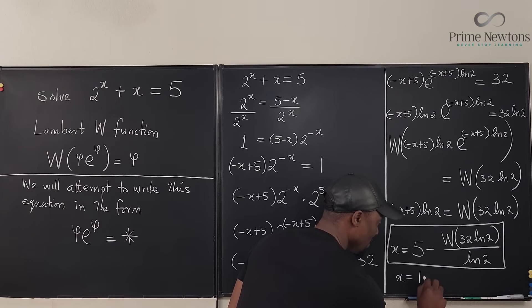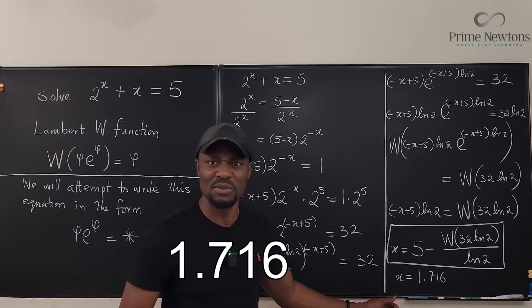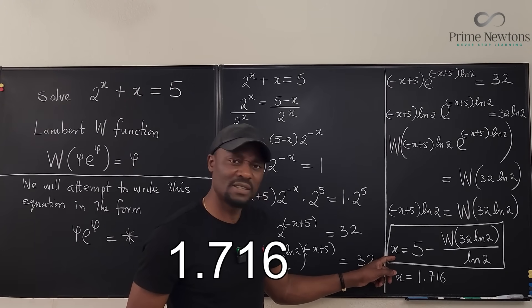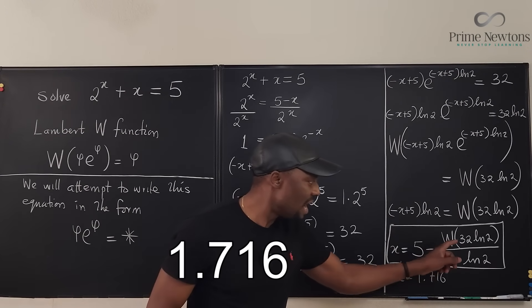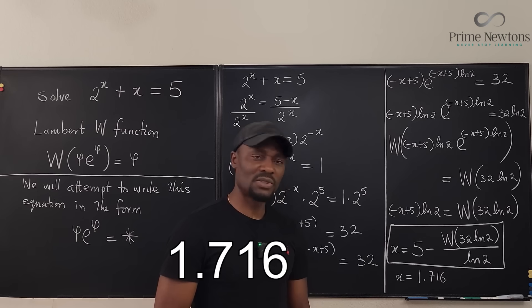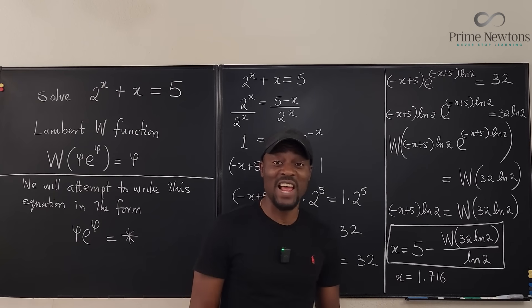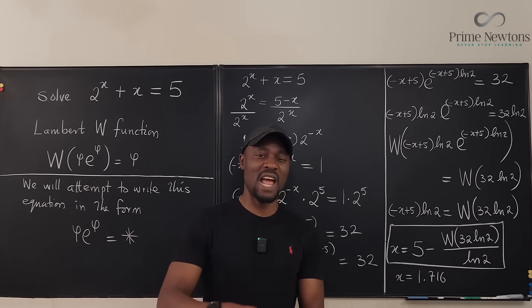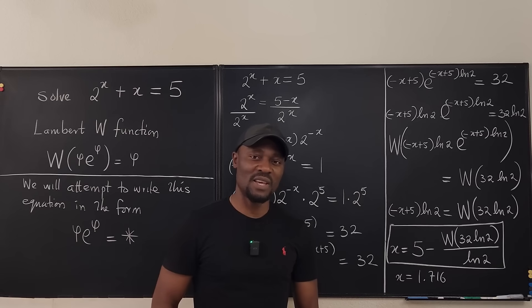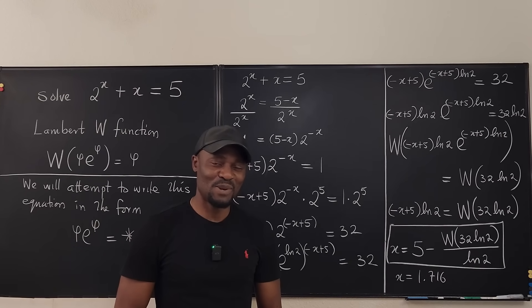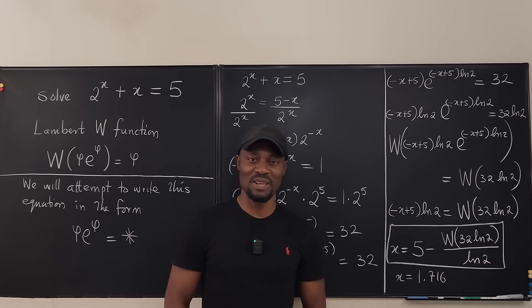x equals 1.716, that's if you want to deal with the decimals. Otherwise, just stick to x = 5 - W(32 ln 2) / ln 2. This answer has a product log and a natural log, all of them logging together. Never stop learning. Those who stop learning have stopped living. Bye-bye.